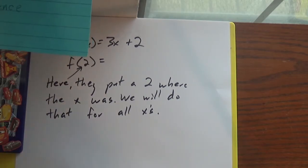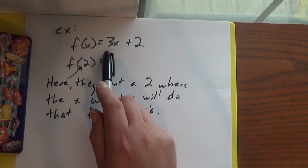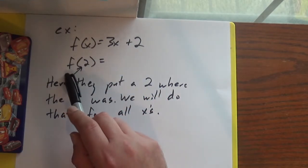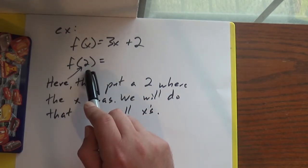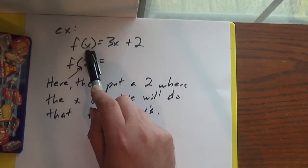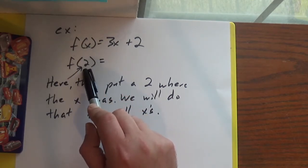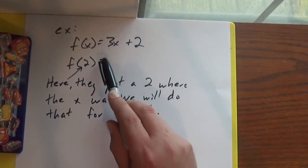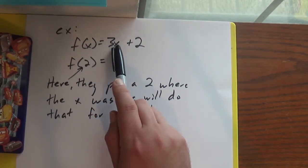All right, so an example. We've got f(x) = 3x + 2 and they want to know what f(2) is. So we put a 2 where the x was, right? So all we're going to do is put a 2 where all the x's are. So we'll put a 2 here, we'll put a 2 here.